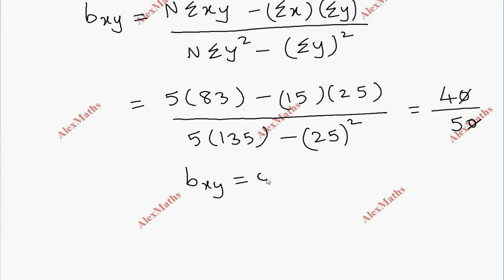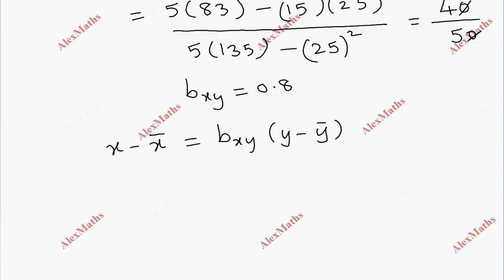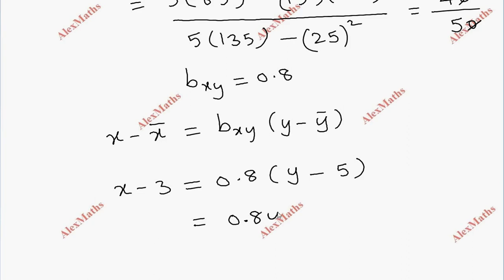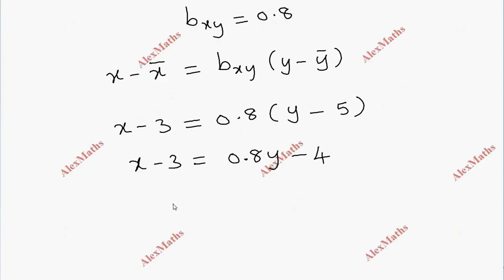With b_xy equals 0.8, we write: x minus 3 equals 0.8 into y minus 5. Multiplying out: x minus 3 equals 0.8y minus 4. So x equals 0.8y minus 1. This is the regression line x on y.